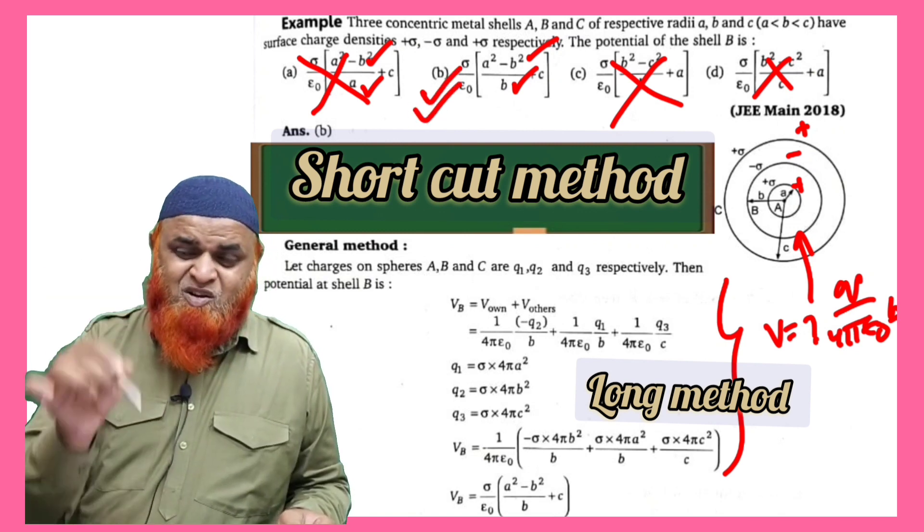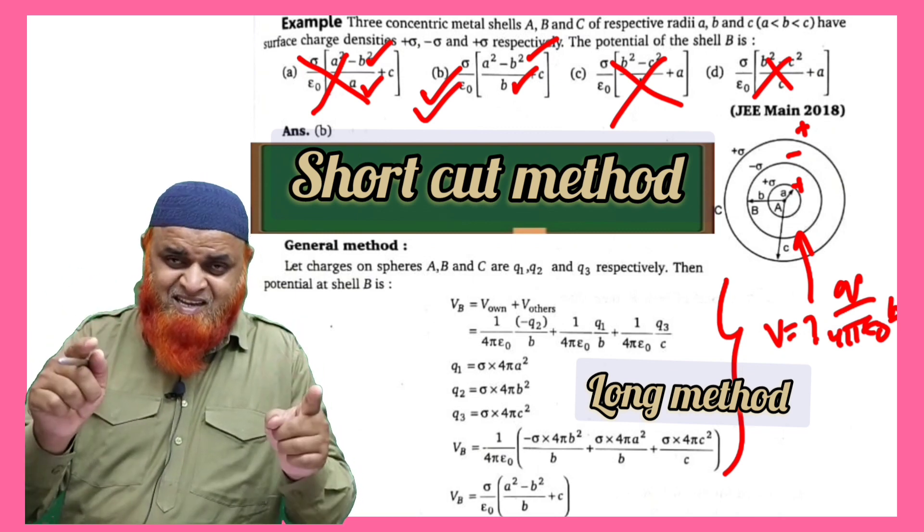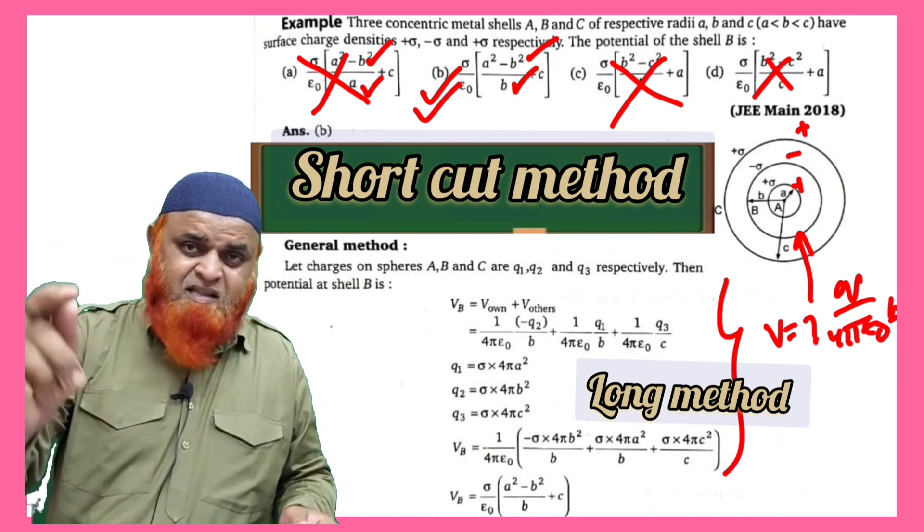So you will get B as the correct answer without solving the problem. You have solved the problem. This is the technique you should learn if you want to be the fastest in India. Thank you.